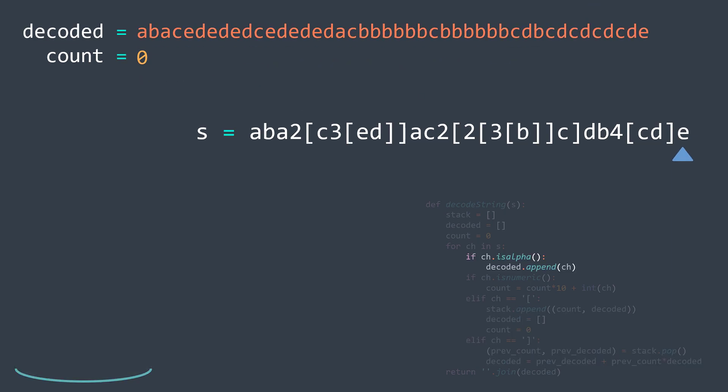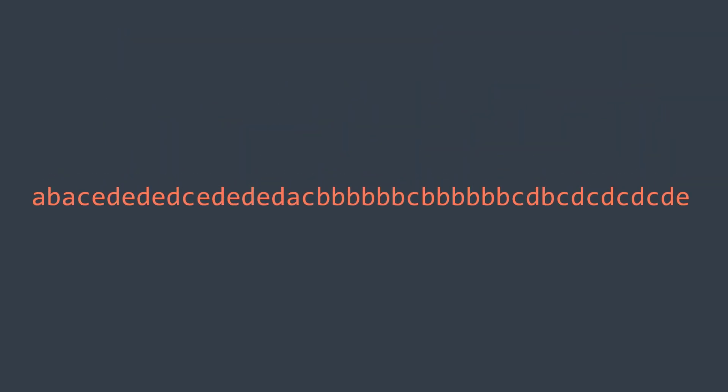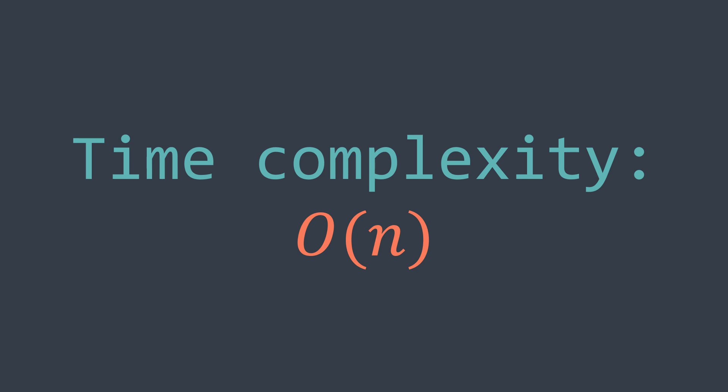We finished traversing the string by applying the algorithm and got our decoded string. The time complexity of this solution is O(n) where n is the length of the input string — we traverse the string once, but there can be cases where it takes more than n operations because of the integers inside the encoded string that make the output much longer.